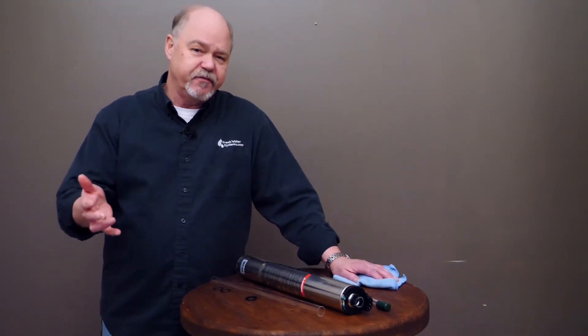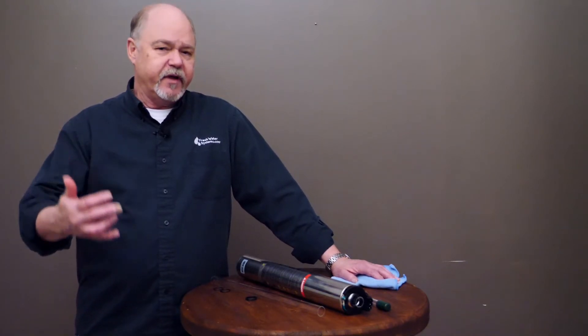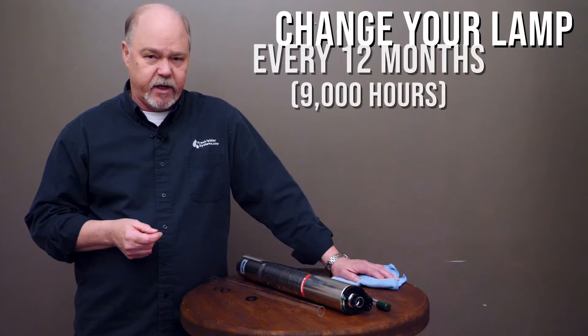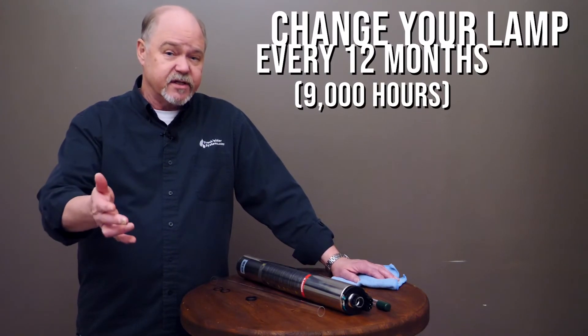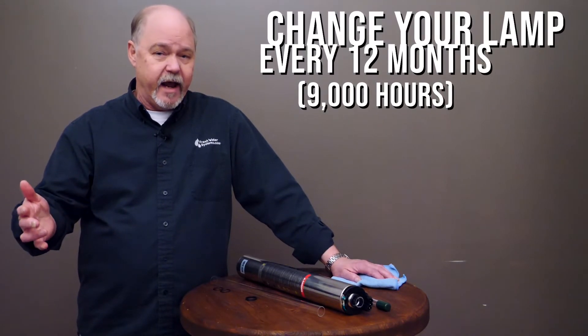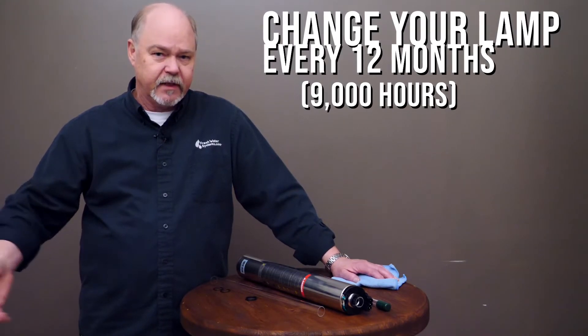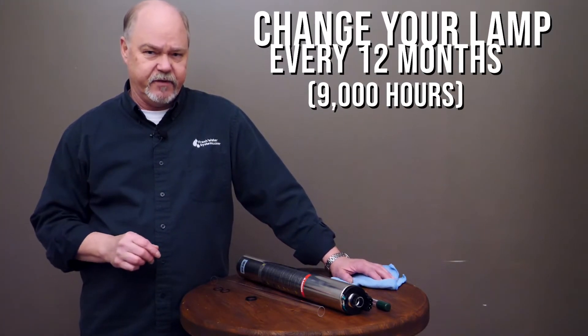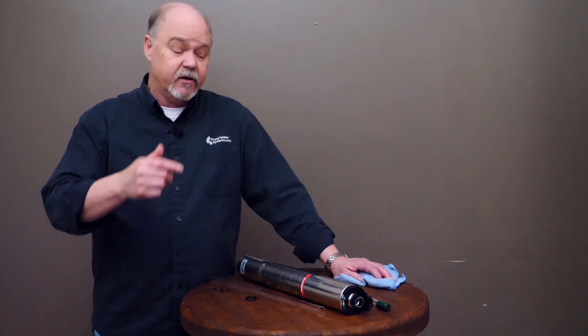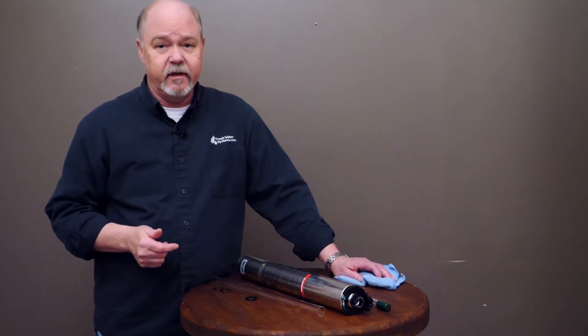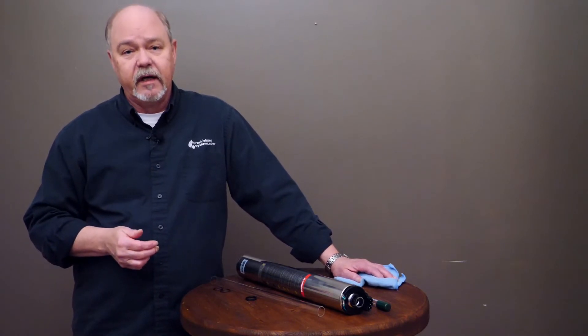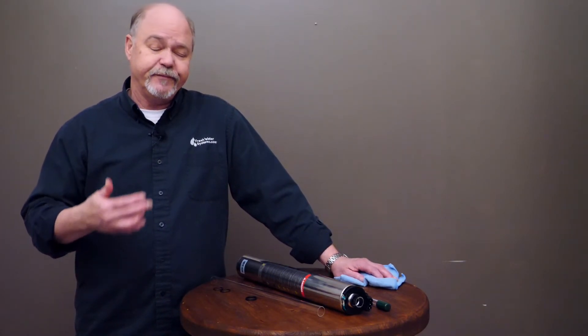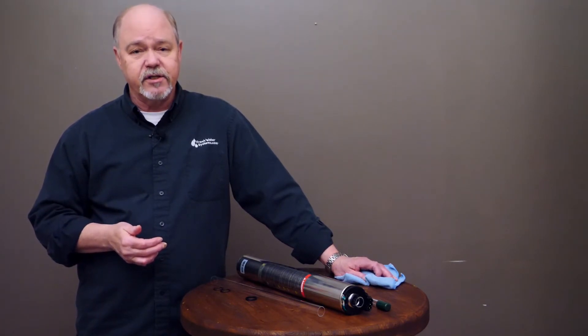So to summarize and finish up there's a couple of things to keep in mind. Always change your lamp every 12 months. Now if you have a system with an amalgam type lamp that's two years, but those are typically pretty rare and sold for specific applications. So the majority of the lamps in a residential setup, 12 months, 9,000 hours. If you fail to do so you're not going to have a disinfection system.